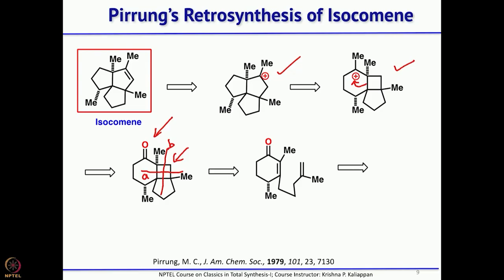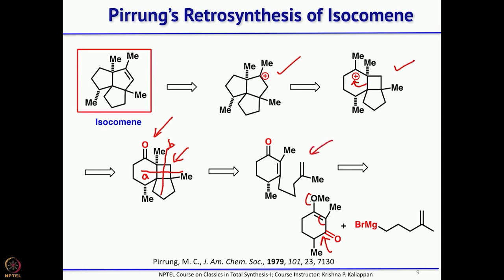This precursor can be easily made by simple acid-catalyzed rearrangement. If you have the enone and add the Grignard, it adds 1,2, giving you an alcohol. Then simple acid-catalyzed treatment transposes the oxygen. That way you can easily get this product in 2 steps. This was the simple retrosynthesis planned by Paquette. Let us see how this synthesis worked out.